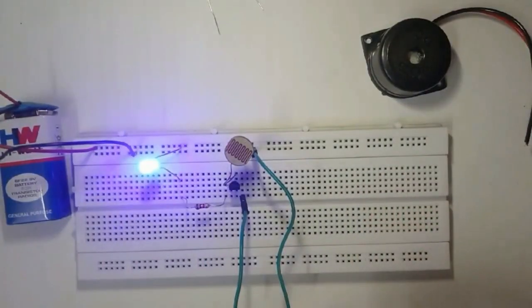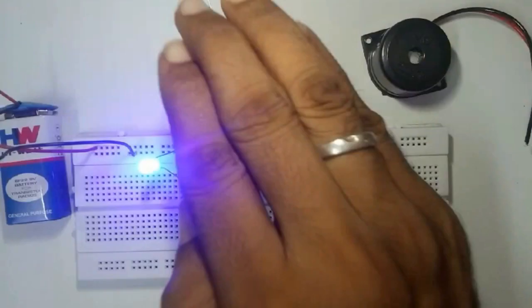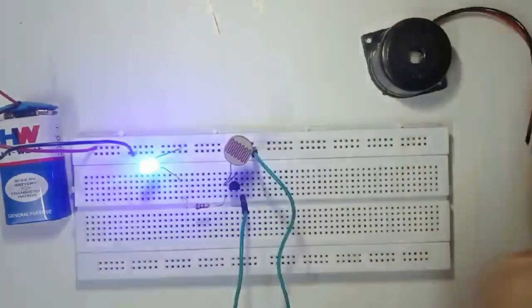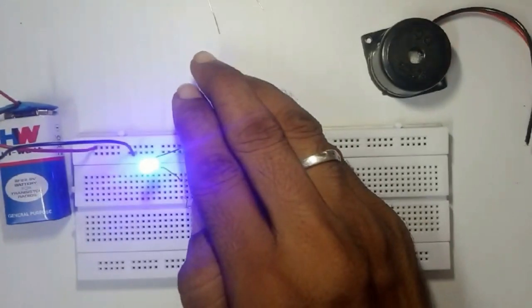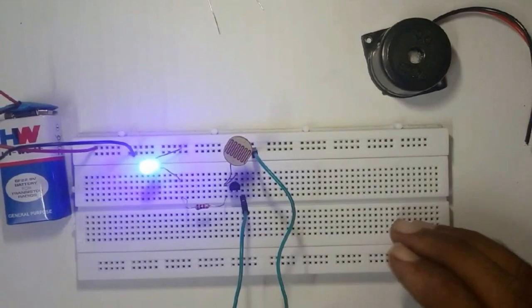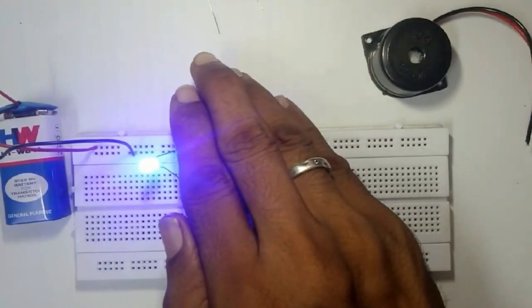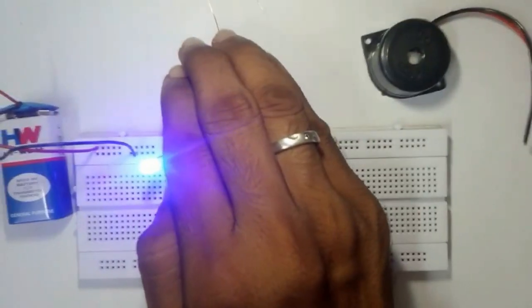Okay, let's see that. Let's arrest the light falling onto the LDR by closing it like this by hand. Oh, nothing is happening. So why is that? Nothing is happening. Let me do it sincerely.